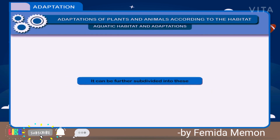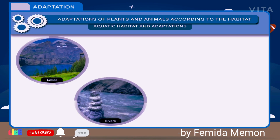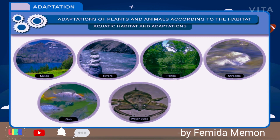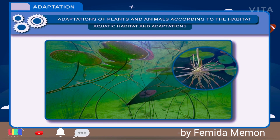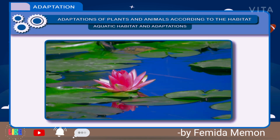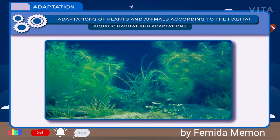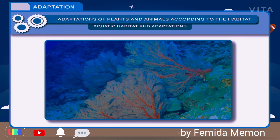Aquatic habitat and adaptations. It can be further subdivided. Freshwater habitat refers to lakes, rivers, ponds and streams. Examples of animals living in these habitats include various types of fish, water bugs, and water lilies. Some of these plants have their roots fixed in the soil below the water. Roots are much reduced in size and their function is fixation, not absorption. The stem of these plants is long, hollow and light, and grows up to the surface of the water. The leaves and flowers float on the surface of water. Some aquatic plants are totally submerged in water; such plants have underground stems. Some of these plants have narrow and ribbon-like leaves that can bend in flowing water.